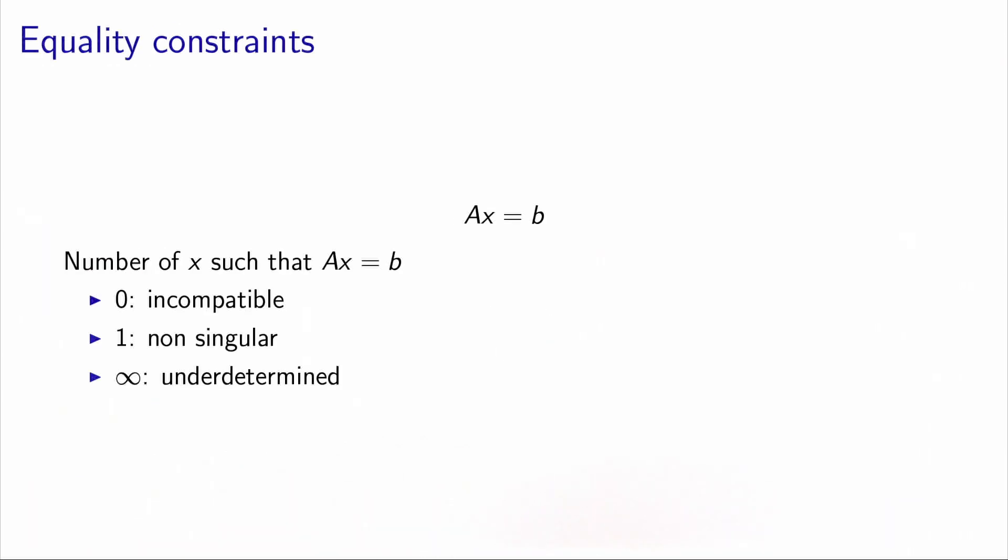Let's consider first the equality constraints only. We have a system of linear equations, Ax equals b, where A is a matrix of m rows and n columns, and b is a vector in R^m. Now, how many vectors x verify this system of equations? Well, it depends.